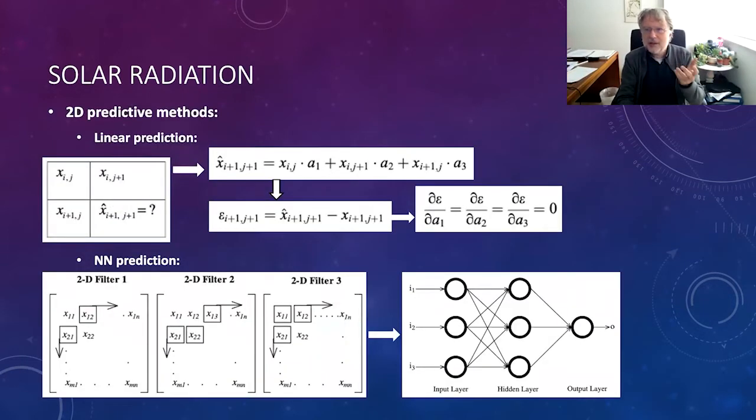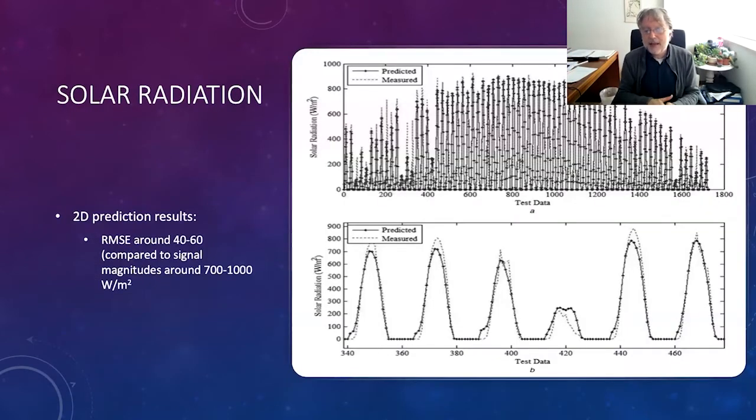We can do a prediction of the next hour's solar radiation from the past hour and the previous days, the current hour and the previous days past hour. Linear prediction corresponds to the first line of this slide. And we can even do some nonlinear kind of prediction using neural networks and things like that. And we came up with quite nice results with this.